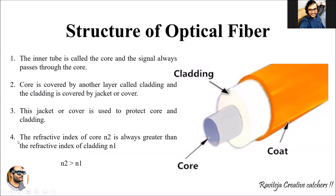An important point is the refractive index of the core. The refractive index of the core is considered as n2, and the refractive index of the cladding is n1. The refractive index of the core is always greater than the refractive index of the cladding. We will cover what refractive index means in the next class.